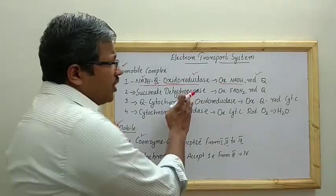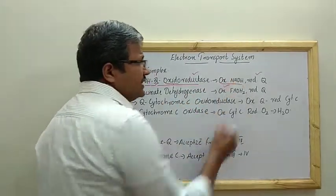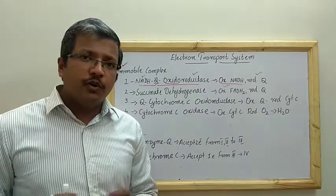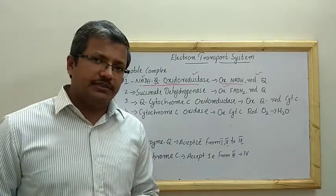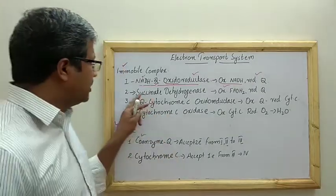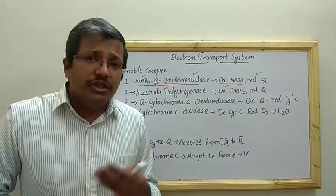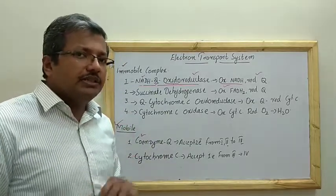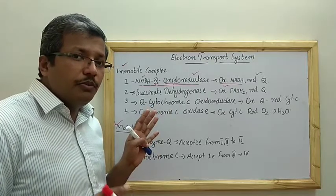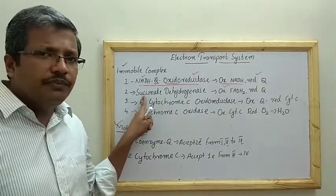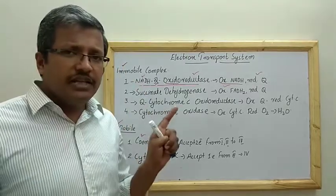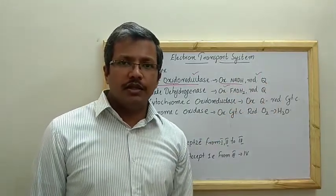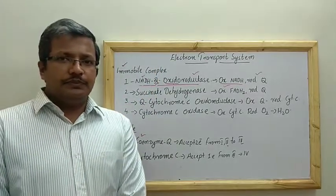The second complex is succinate dehydrogenase, also called succinate Q reductase. From the name we can see that it oxidizes FADH2 and reduces coenzyme Q. This is actually part of the Krebs cycle, where succinate is converted into fumarate by oxidation, forming FADH2, which is then oxidized to reduce coenzyme Q.